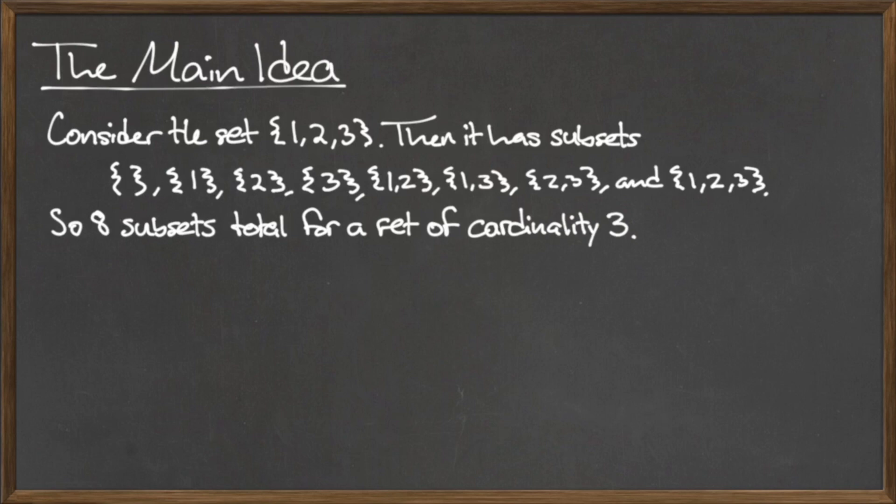For example, consider the set containing the elements 1, 2, and 3. To list all of the subsets of this set, we need to consider every possible combination of elements that we can pull from this set. For this particular set, there are 8 subsets in total, shown here.